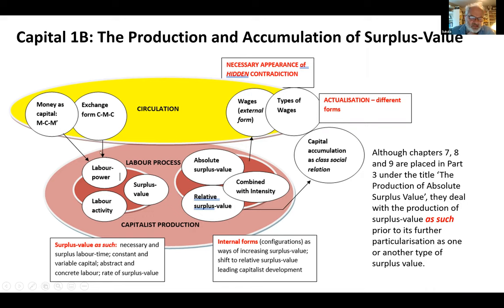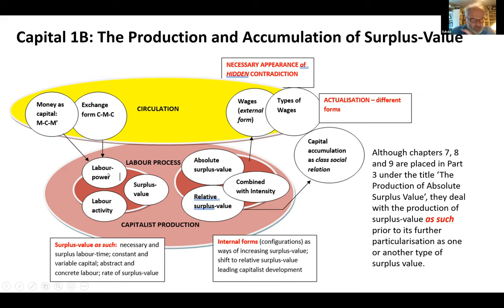These two circuits are applied by Marx to the question of the sale and purchase of labor power — moving from circulation into production. Capital seeks a commodity with the special use value of creating more value. The capitalist buys labor power, creates new commodities, sells them for more money. Marx's point is that money here is not merely a means of exchange but a social relationship in which money is expanding as capital.